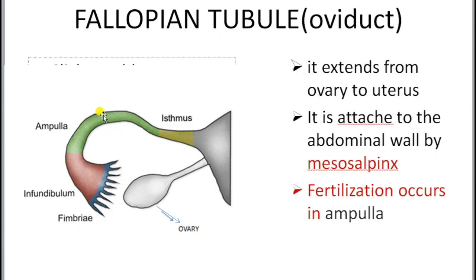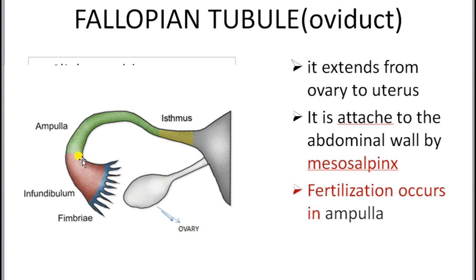The fallopian tubule or oviduct consists of three parts: infundibulum, ampulla, and isthmus. The outer portion of the infundibulum contains finger-like projections known as fimbriae. By their undulating movements, they collect the liberated ovum from the ovary during ovulation and send it into the infundibulum, where it moves toward the ampulla by peristaltic movement due to the presence of ciliary epithelium inside the fallopian tubule.